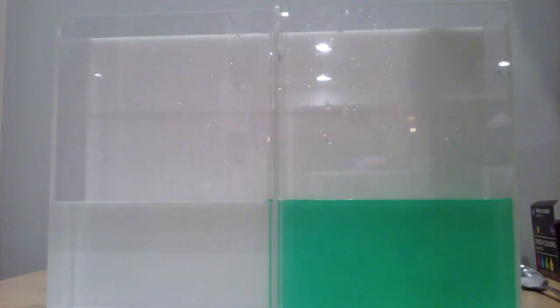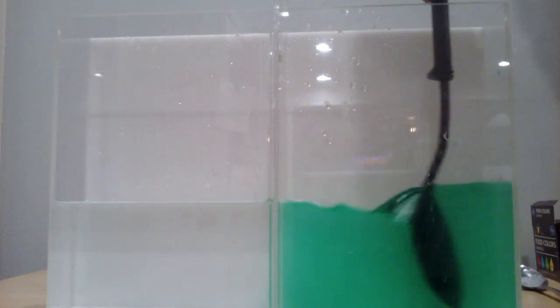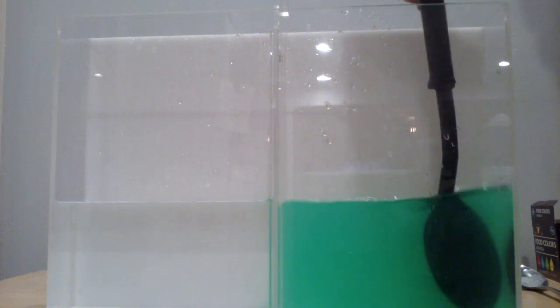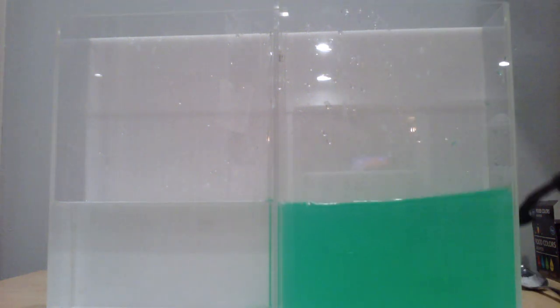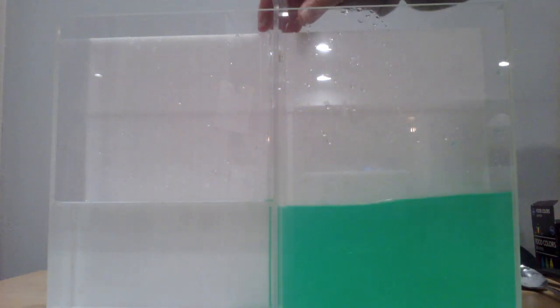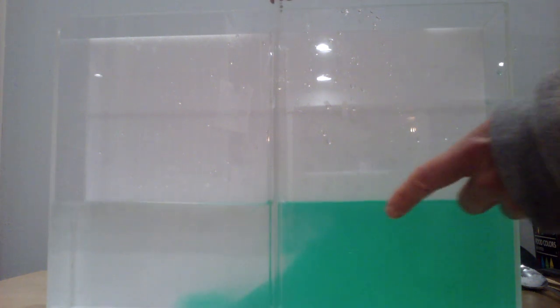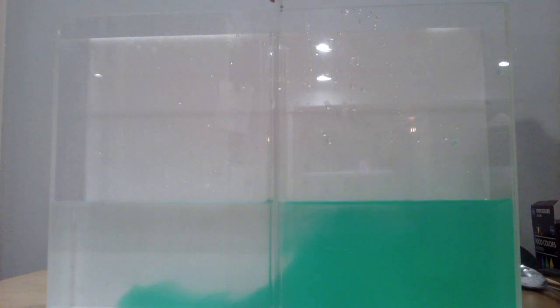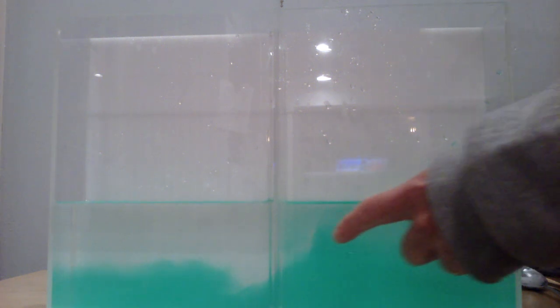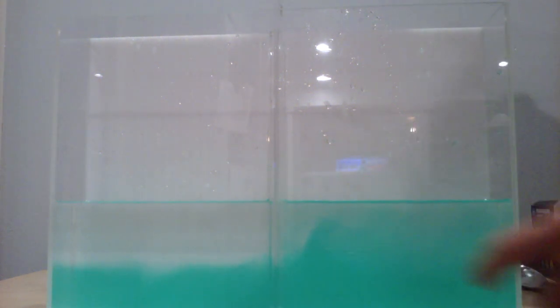So I'm going to stir this up, and then we'll open the divider in between to see if there's a current. Okay, here we go. You can see the green, more salty water flow underneath the fresh water because it has a greater density, and you can also see the fresh water flow above.